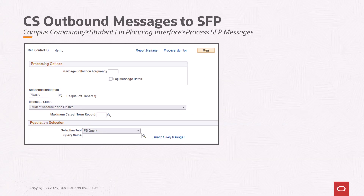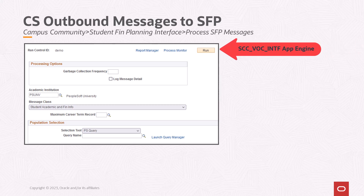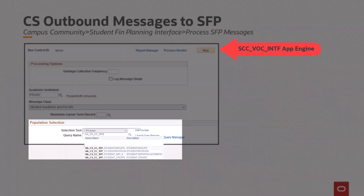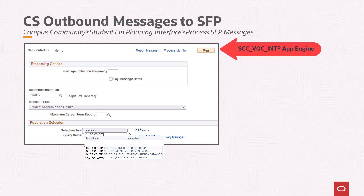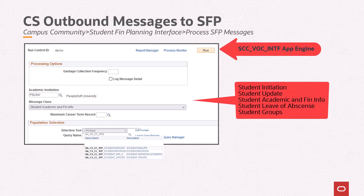Using the process SFP messages run control, the CS outbound messages are sent to SFP from the SCC_VOC integration app engine. Each CS outbound message uses pop-like criteria to identify the students that should be sent to SFP. Sample queries have been delivered and can be found with the query name starting with QA_CS_CC_SFP. The processing options are used for consuming inbound messages from SFP, but the outbound messages are not used in processing options and should remain blank. Enter the Academic Institution value corresponding to the student population being processed. The Message class is where you select one of the five CS outbound messages. The Maximum Career Term Record field allows you to select a term where the SAFI will not include any term or program data effective after the selected term.